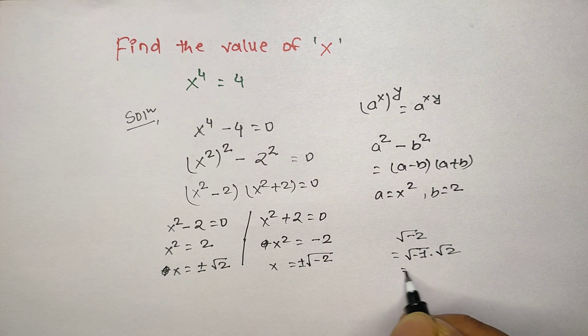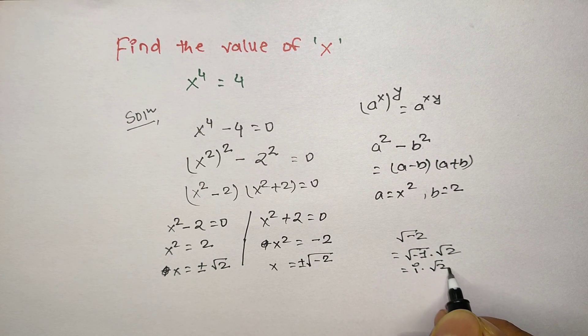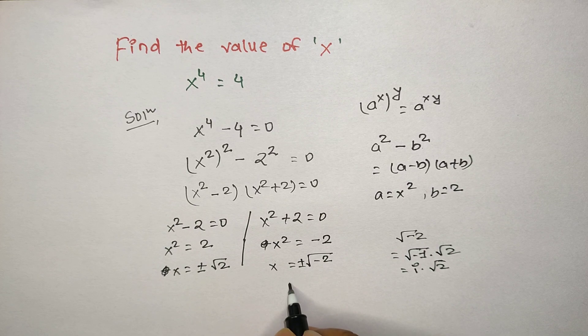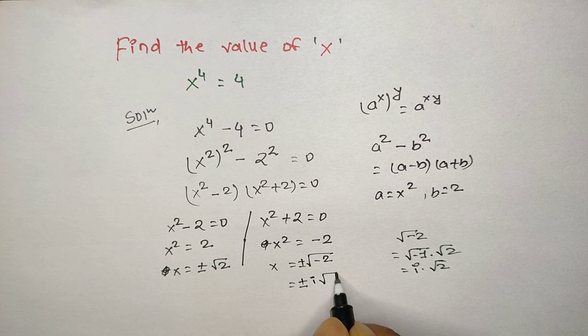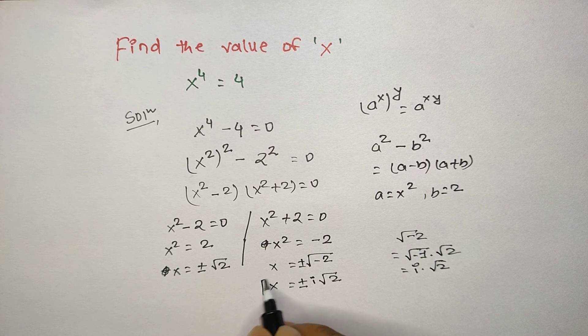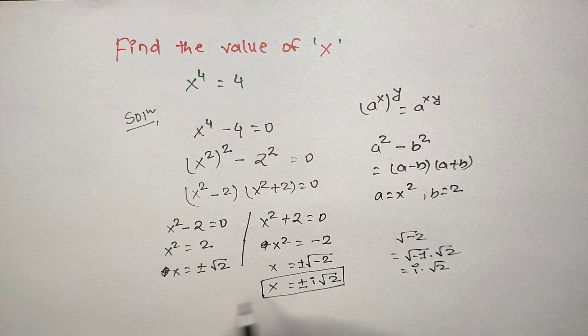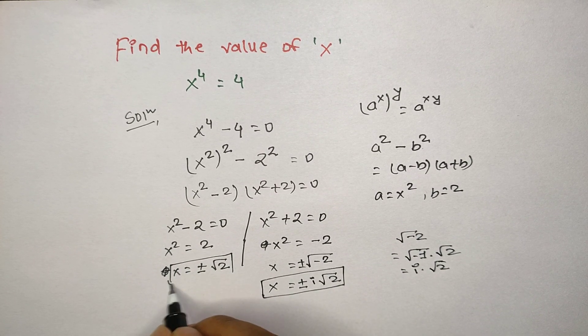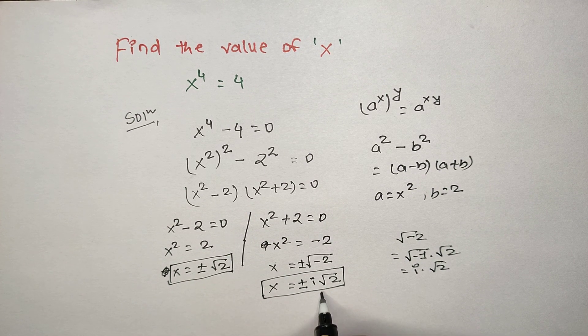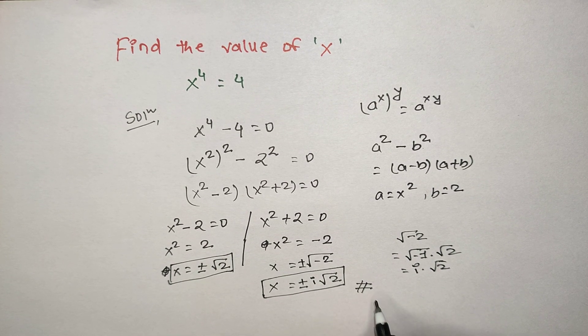So negative square root of negative 2, we can write this as iota times square root of 2. From here we can get two values of x, and from here we can get two values of x. This is our real solution and this is our complex solution, which is the final answer of this question. Hope you understand this question clearly.